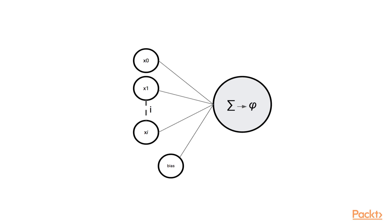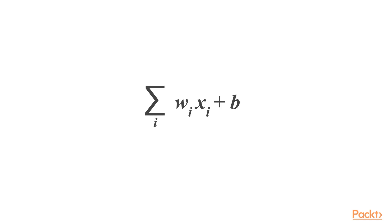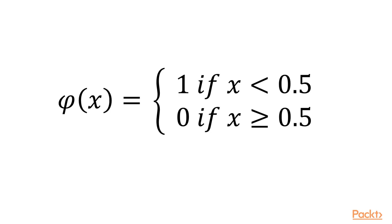A perceptron can have multiple inputs. On these inputs, the unit performs some computations and outputs a single value — for example, a binary value to classify two classes. The computations performed by the unit are a simple matrix multiplication of the input and the weights. The resulting values are summed up and a bias is added. These computations can be easily scaled to high-dimensional output.